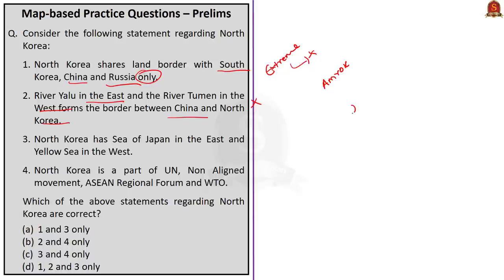First, let us look at Jhelum. We all know Jhelum has its source at a spring in Verinag in the south-eastern part of the Kashmir valley. Near Muzaffarabad, Jhelum takes a sharp hairpin bend and moves southwards. In that process, it forms the India-Pakistan boundary for 170 kilometers, after which it emerges again near the Potwar valley in Pakistan.